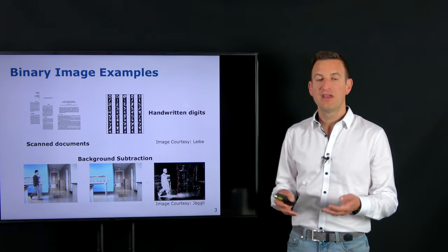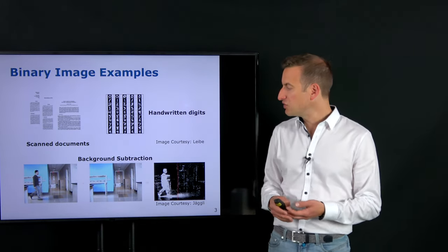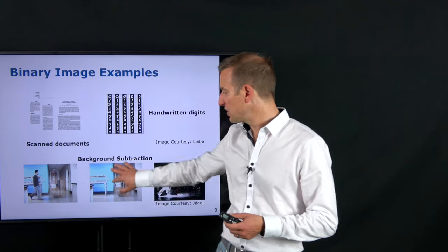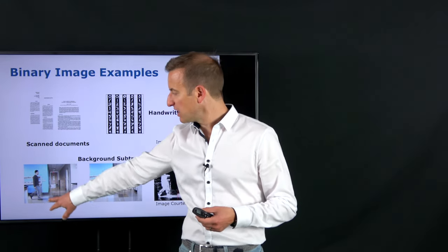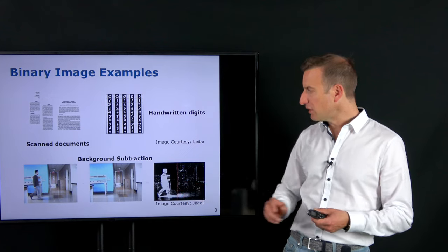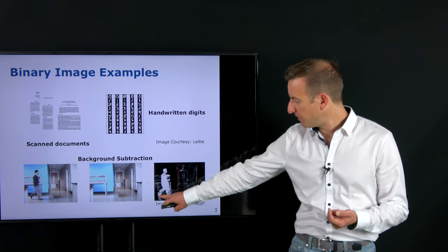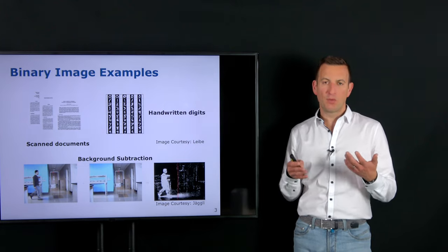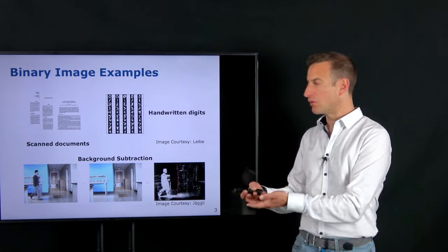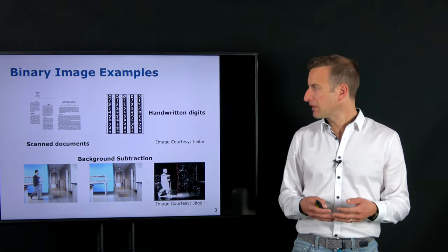A couple of examples where binary images are useful: scanned documents, where for the text itself you can go quite far with just two intensity values; handwritten digits; or masks that use background extraction. For example, if you have a background image and then a second image with a person in the foreground, by computing the difference you can highlight which areas have changed — such as the human and their shadow — or use this to mask out certain operations in the foreground or background.